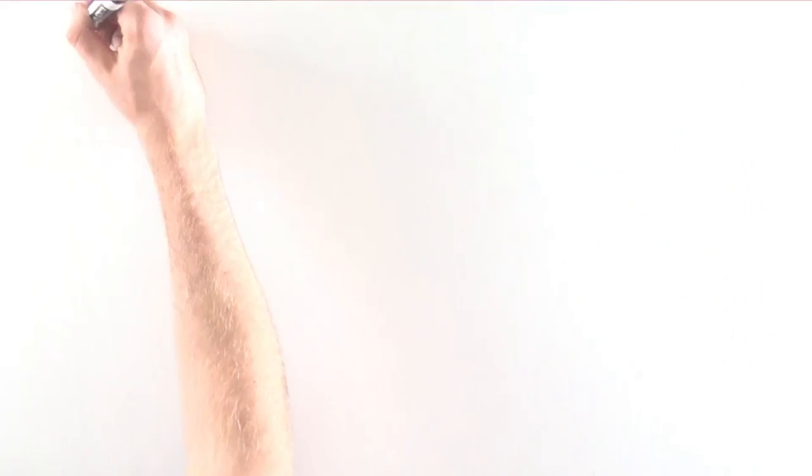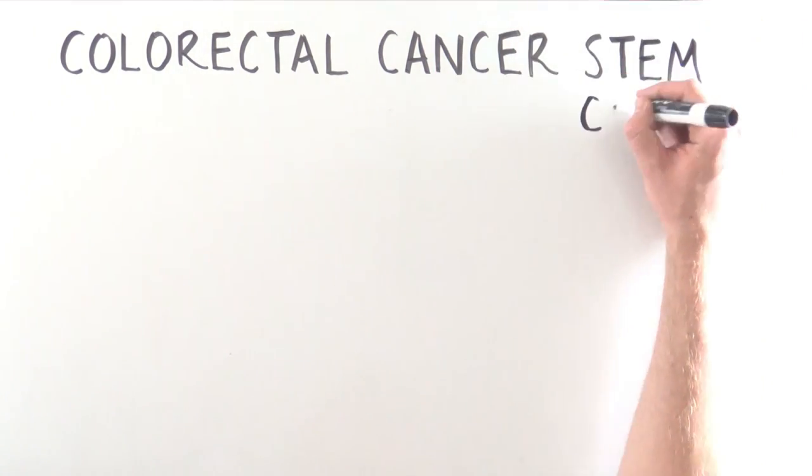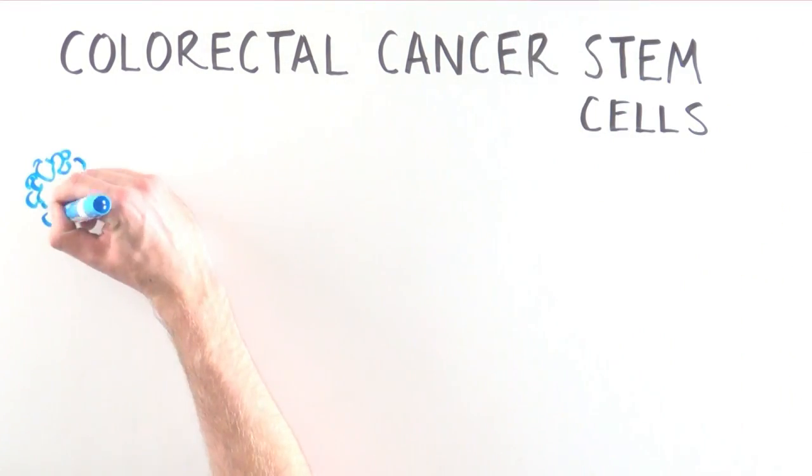Interestingly, we can find cells that resemble stem cells in some colon cancers. These are called colorectal cancer stem cells. So what are those?